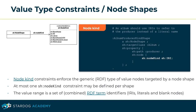The value type constraints on node shapes restrict the kind — the generic RDF type — of value nodes targeted by the node shape. At most one node kind constraint may be defined per shape. There is a predefined range of values identifying combinations of RDF terms such as IRI, LITERAL, and BLANK node. The producer node in the code snippet is expected to be an IRI instead of, for example, a string literal.